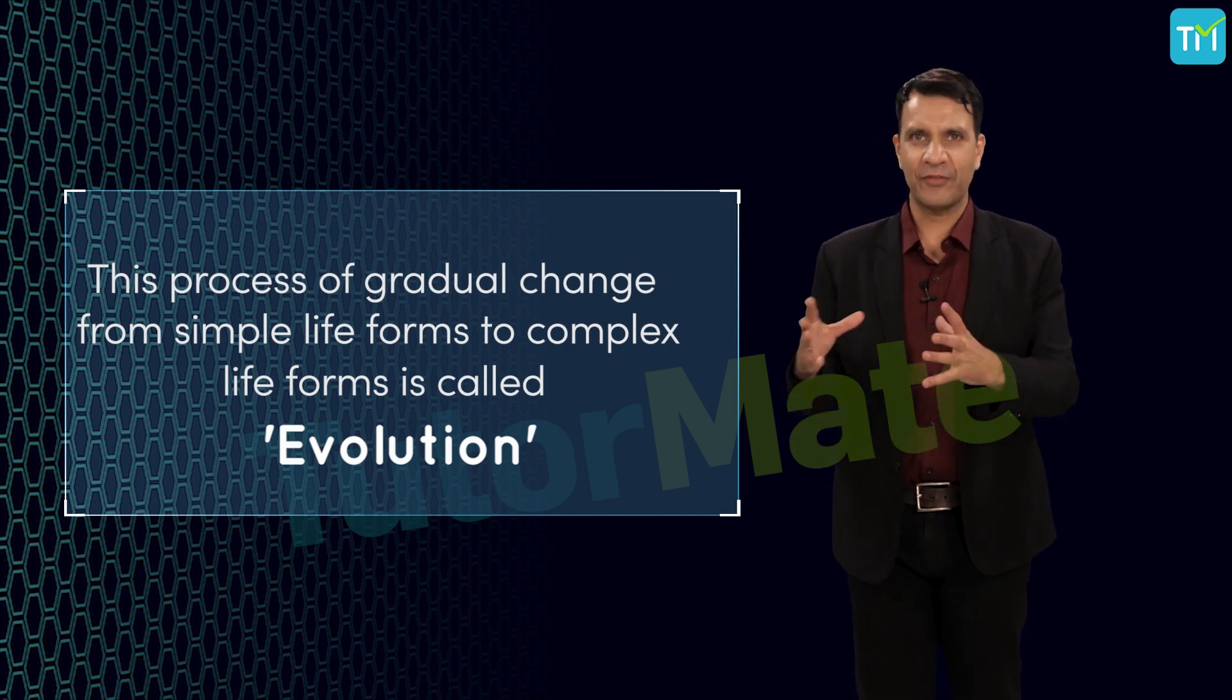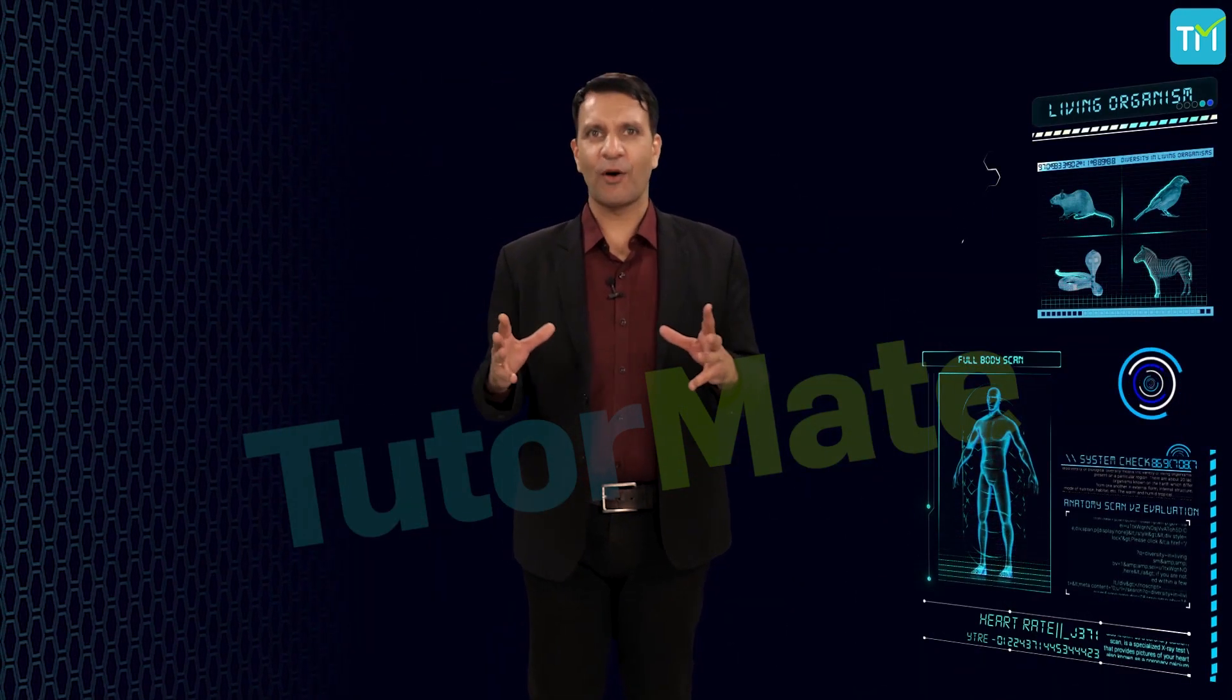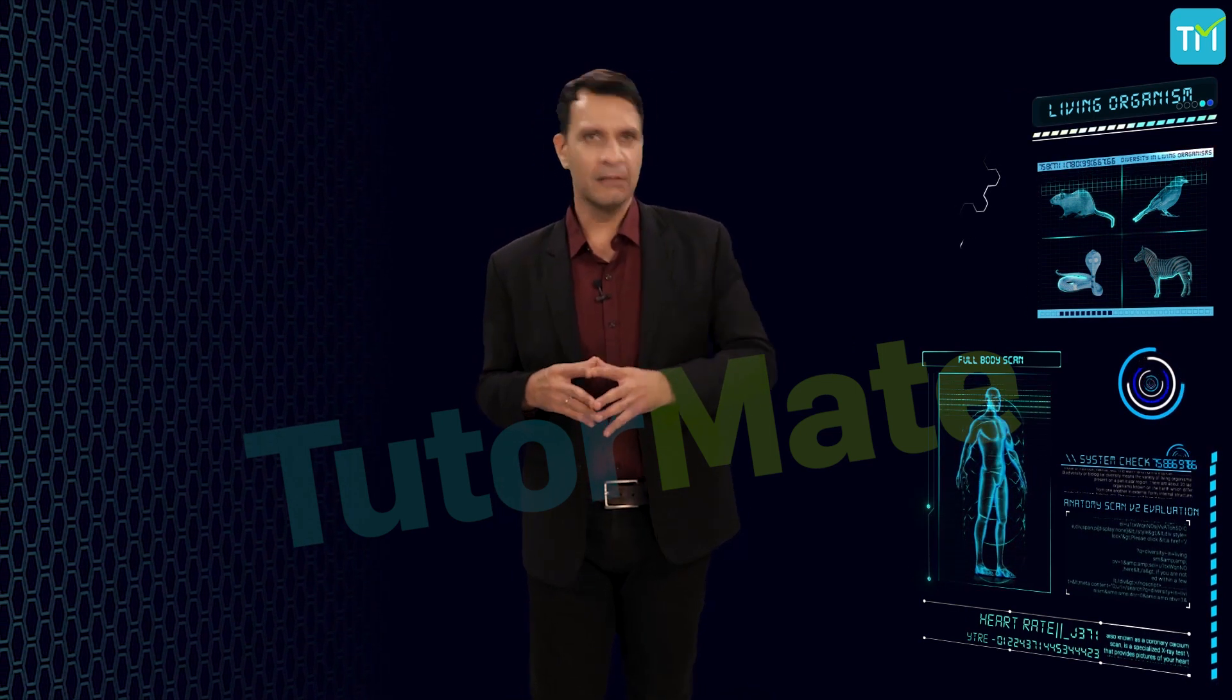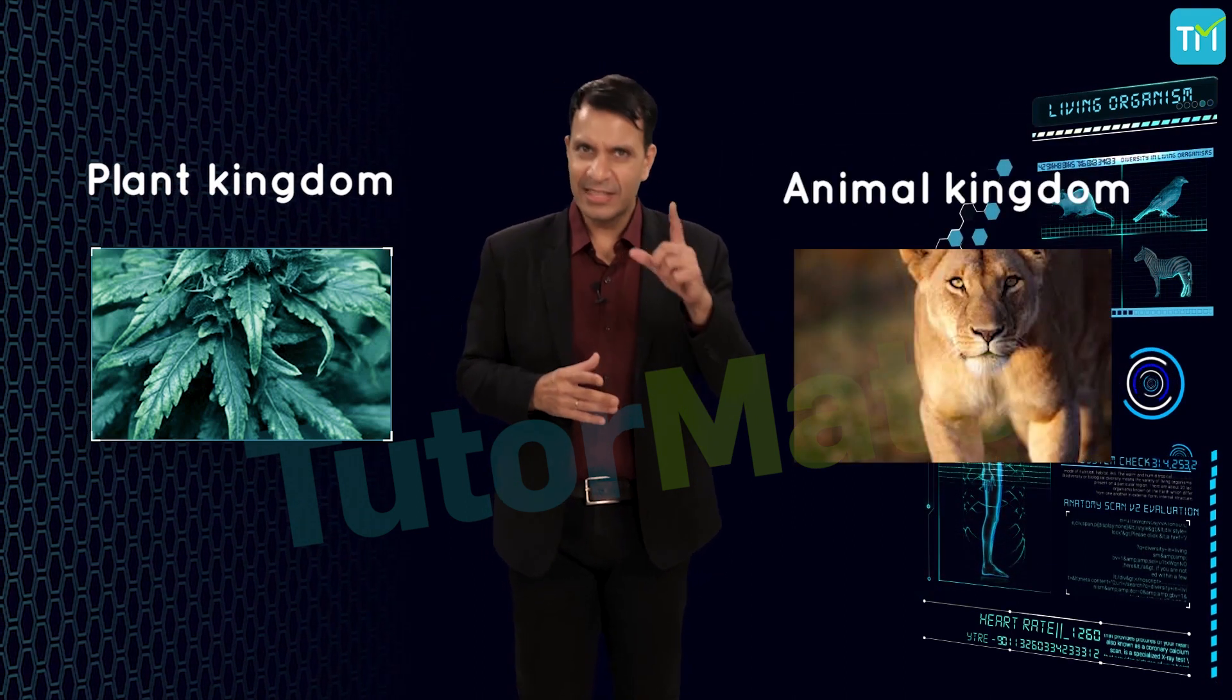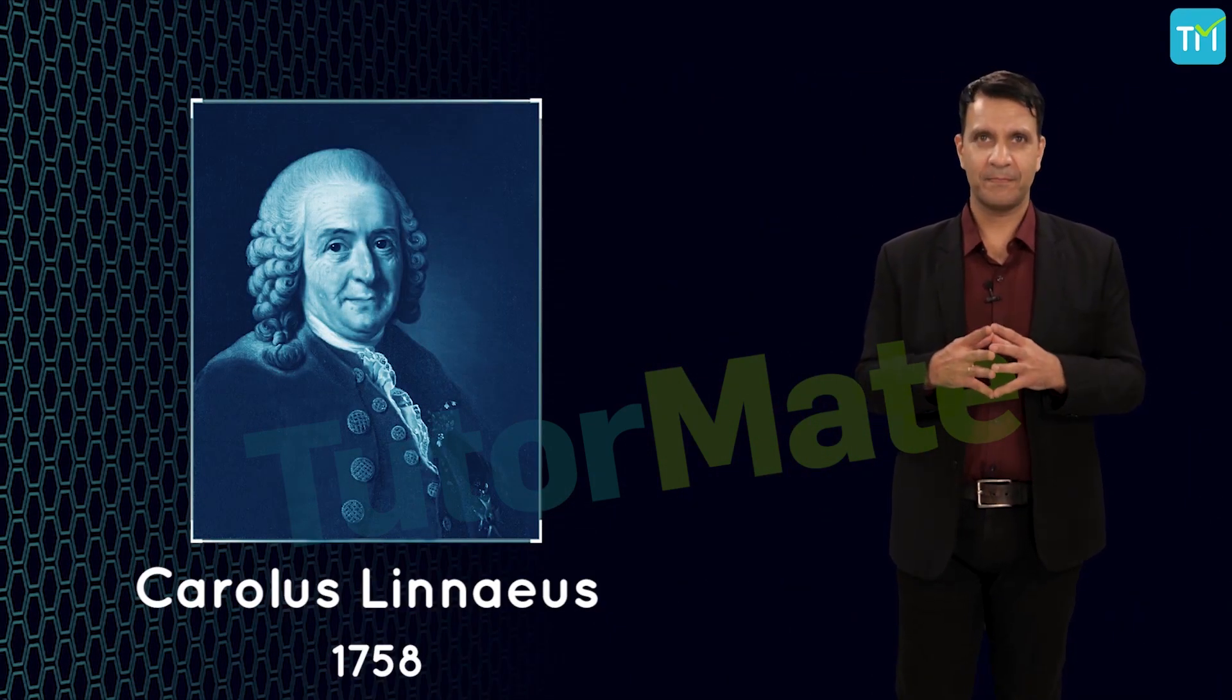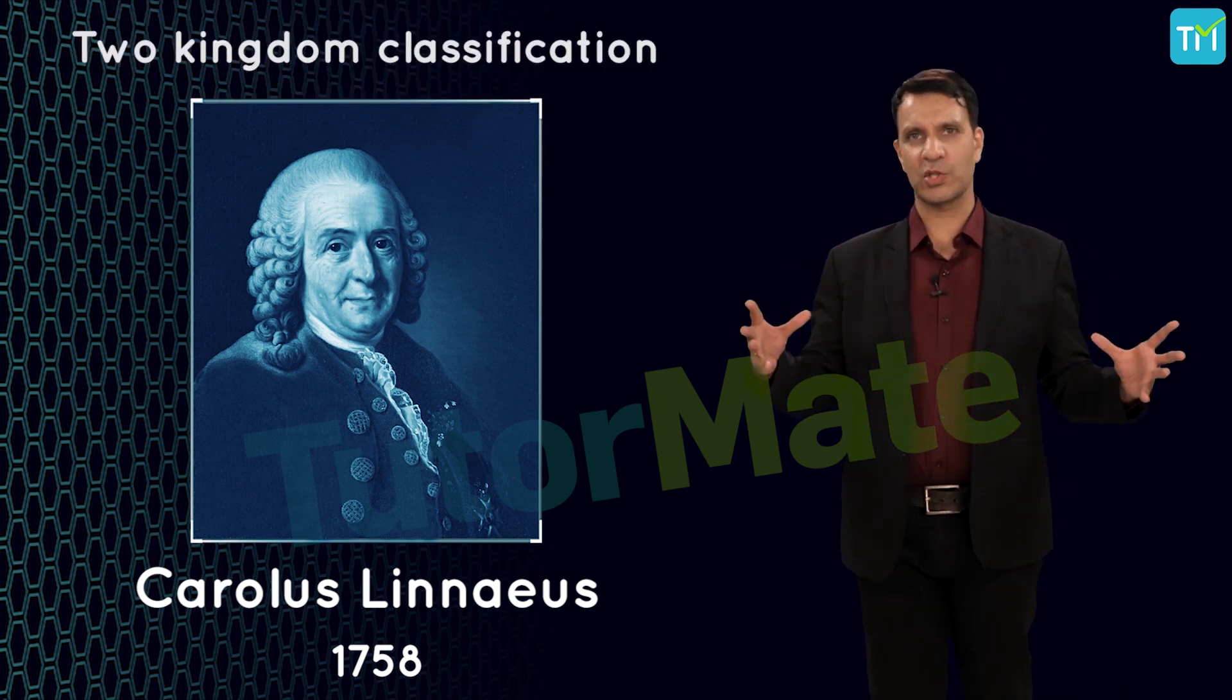Now, the initial system of classification contained only two broad categories of kingdoms, namely plant kingdom and animal kingdom. This system was suggested by Carolus Linnaeus in 1758. He termed this classification as the two kingdom system of classification.